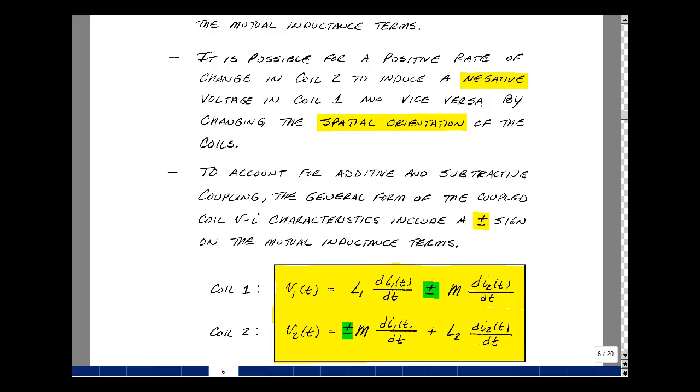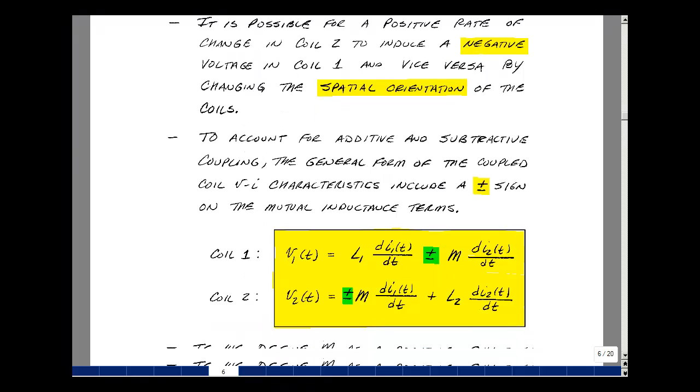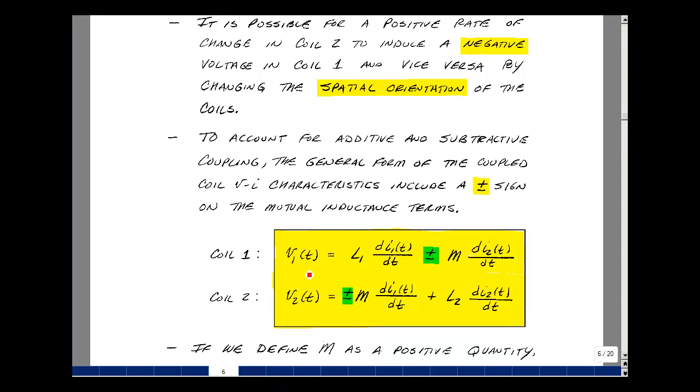To account for the additive and subtractive coupling, the general form of our coupled coil VI characteristics includes a plus and minus sign on the mutual inductance terms. I've rewritten those right here, where V1 = L1(dI1/dt) ± M(dI2/dt), and V2 = ±M(dI1/dt) + L2(dI2/dt).